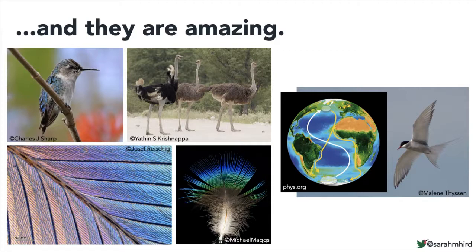Within birds there is amazing morphological and ecological diversity, as you can see between this hummingbird in the upper left and those ostriches. How do these traits and features and natural histories and evolution relate to the microbiome?